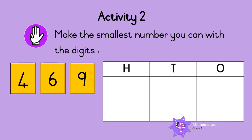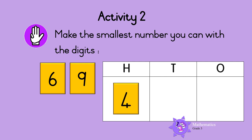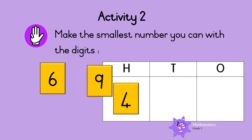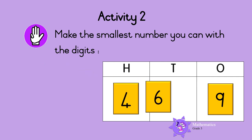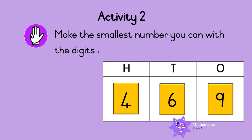What about this one? The digit with the lowest value is four, so four goes in the hundreds column. The digit with the highest value is nine, so nine goes in the ones column. The remaining digit goes in the tens column, so six goes in the tens column. So the smallest number we can make is four hundred and sixty-nine.